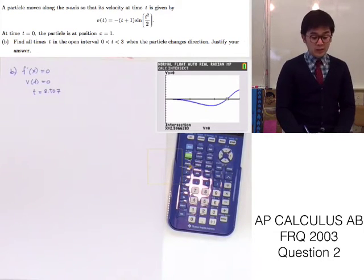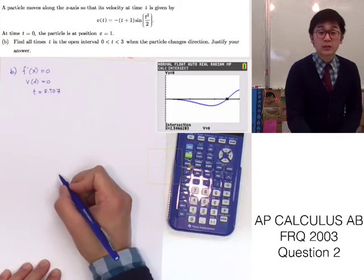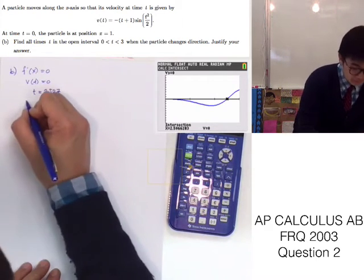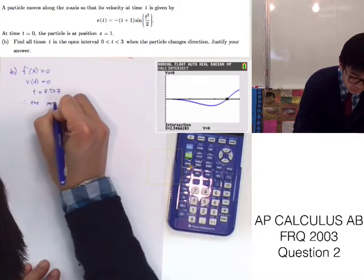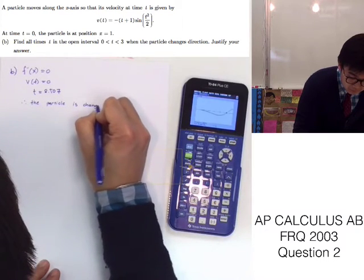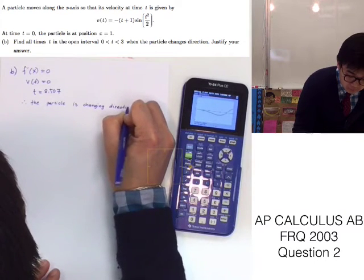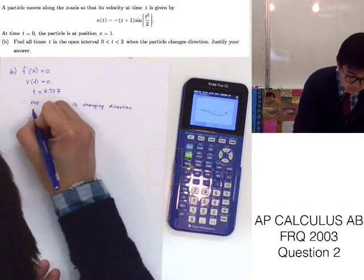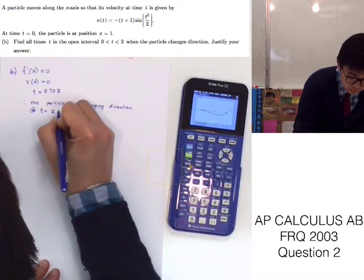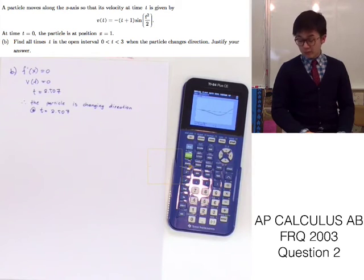This is our critical number, and we can say that the particle is changing its direction at t equals 2.507. This is how we answer problem letter B.